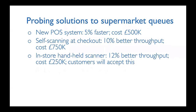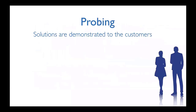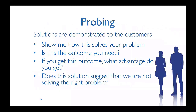Back to the supermarket example. When we probe the point-of-sale system: 5% faster, costs $500K. Self-scanning at the checkout: 10% better throughput, costs $750K — maybe too expensive. In-store handheld scanners: 12% better throughput, costs $250K — customers will accept this. RFID or NFC on everything: maximum speed increase but $750K per year — not worth it. Changing the queuing system — a single line branching to the first available checkout, using airport-style barriers — costs just £1,000 and increases throughput by 5%. The probing demonstrates solutions to customers and asks: does this solve your problem? Are we solving the right problem?